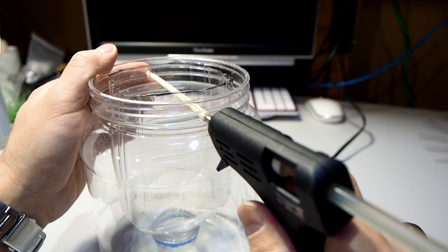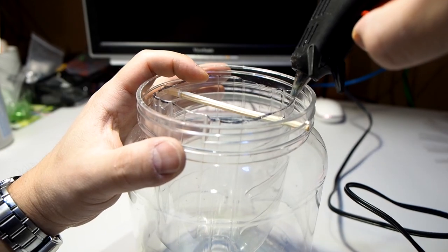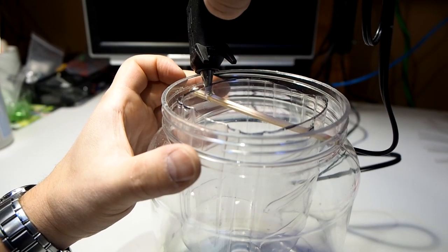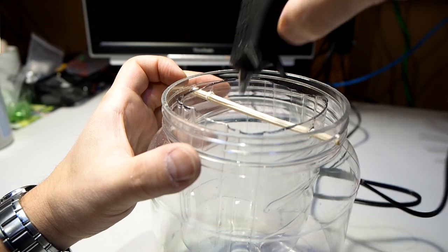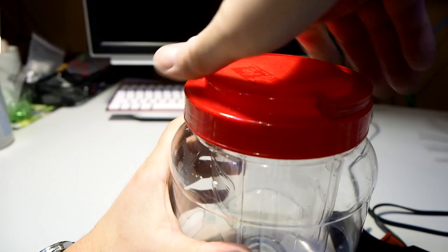Now just put some loving dabs of hot glue on there because I don't want that inner bottle moving side to side out of place. And again you just have to make sure you don't put that hot glue in too much or else it will impede the closing of the lid.